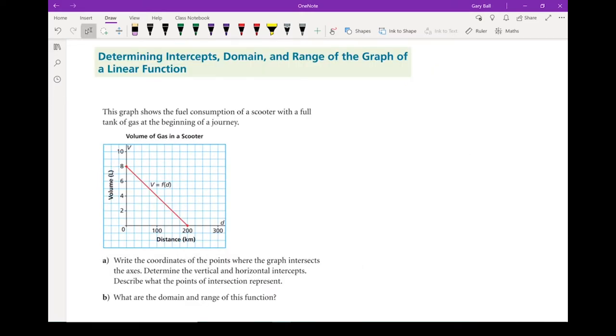Let's take a look at this graph, and we're going to find the intercepts, the domain, and range of this linear function. So first part it asks us for, what are the coordinates of the points where the graph intersects the axes? We've got our horizontal axis, our independent variable, which is essentially our x-axis. And we've got our dependent variable, which is volume, which is essentially our y-axis.